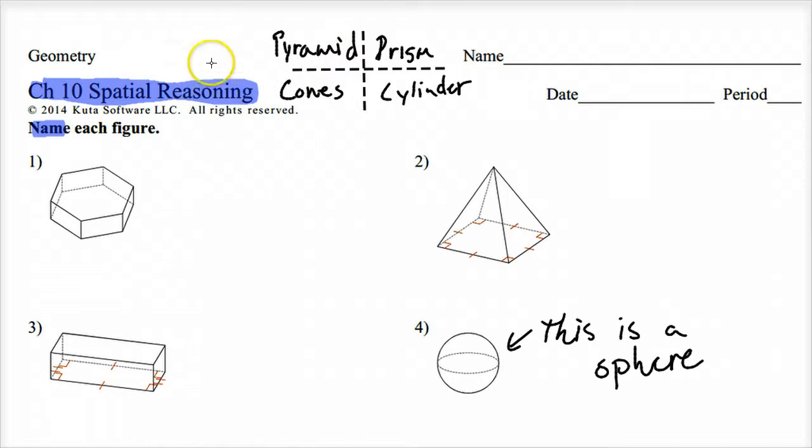But for pyramid, let's see what we got. Okay so a pyramid, it's got a polygon base so both prism and pyramid have polygon bases. And cones and cylinders these have round bases or circle bases.